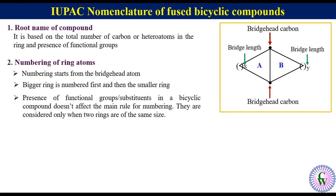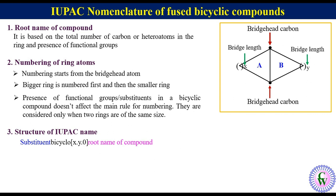The third point is the structure of the IUPAC name. It consists of three parts: substituents, then bicyclo x.y.0, and then the root name of the compound, where x is always greater than or equal to y.